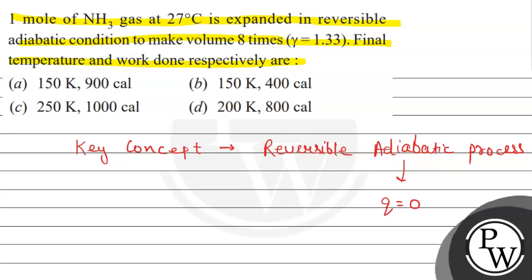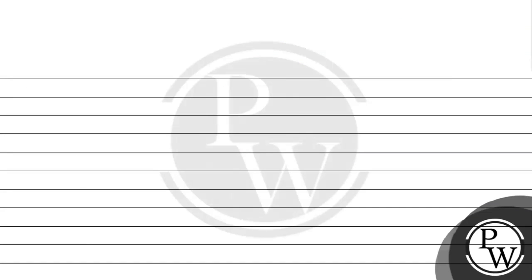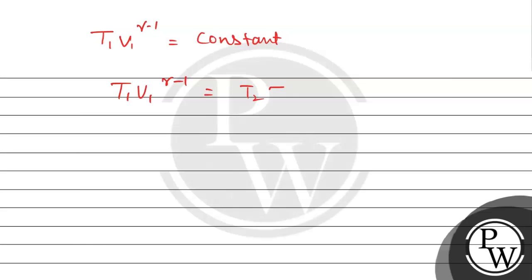We have to find the final temperature and the work done. There is a relationship between temperature and volume for the reversible adiabatic process. We use the relation: T1 V1^(γ-1) = T2 V2^(γ-1).